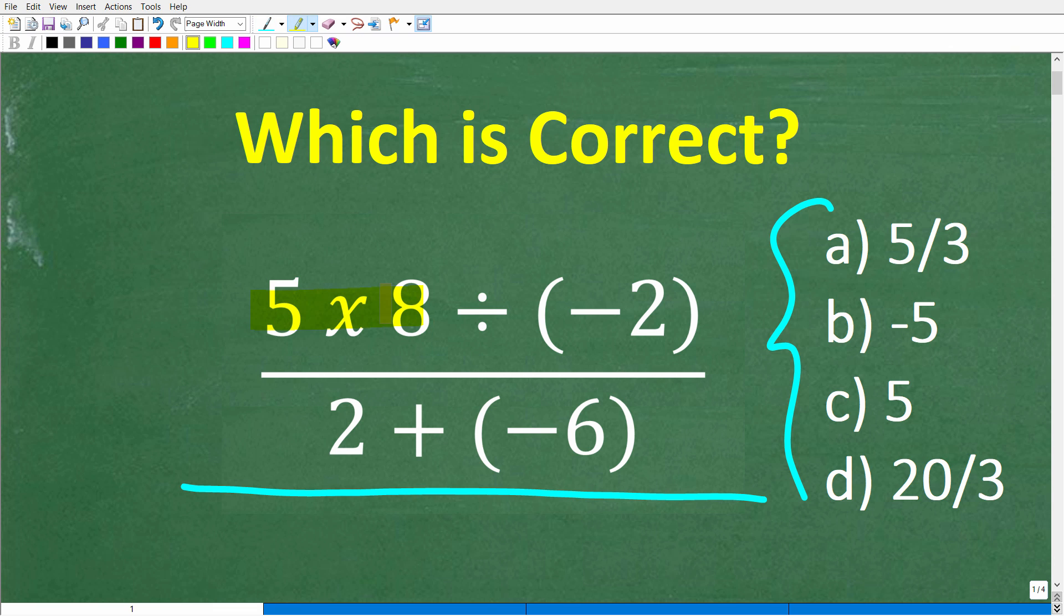We have 5 times 8 divided by negative 2, all that over 2 plus negative 6. And here are our answers. A is 5 thirds, B is negative 5, C is 5, and D is 20 over 3.